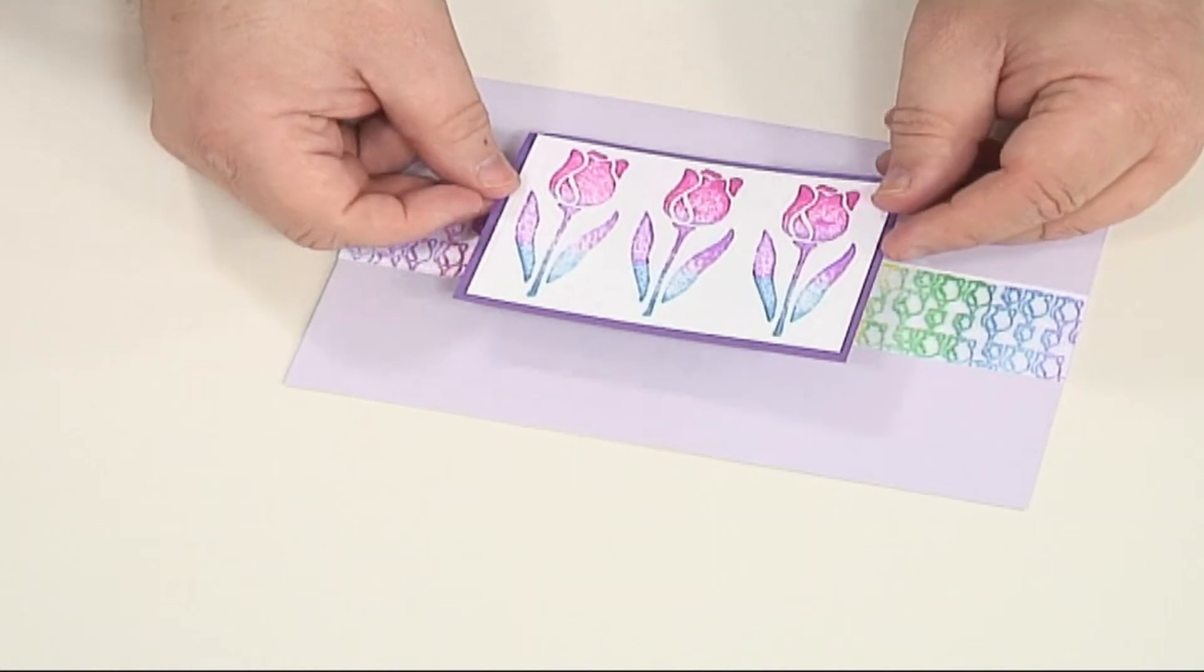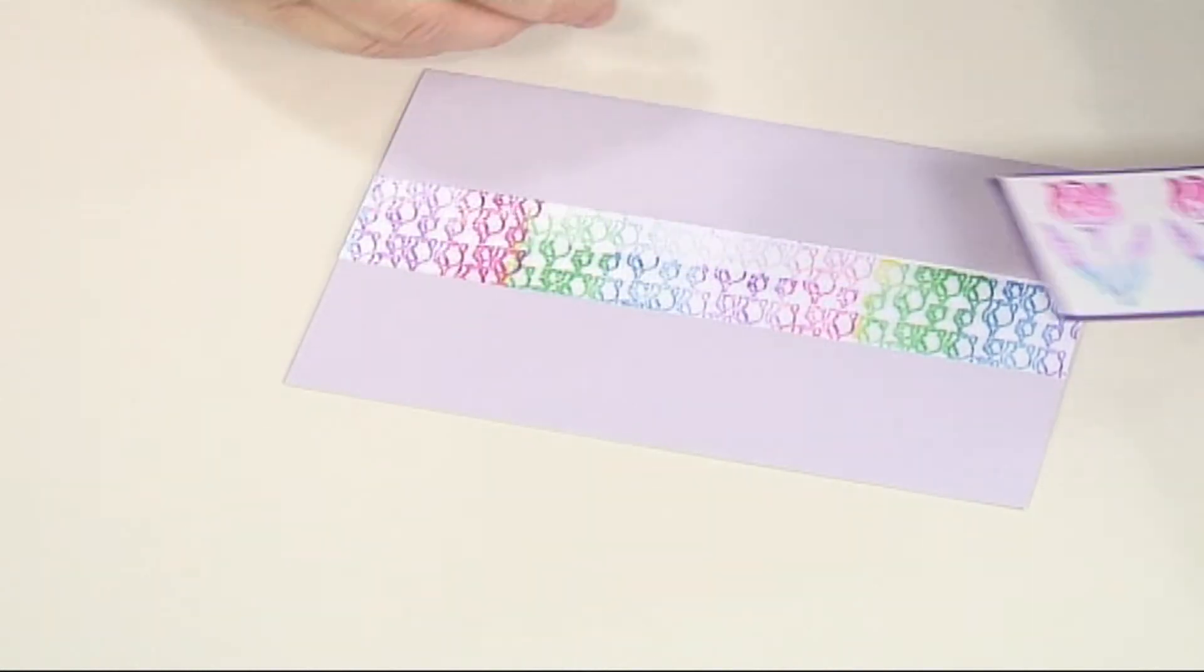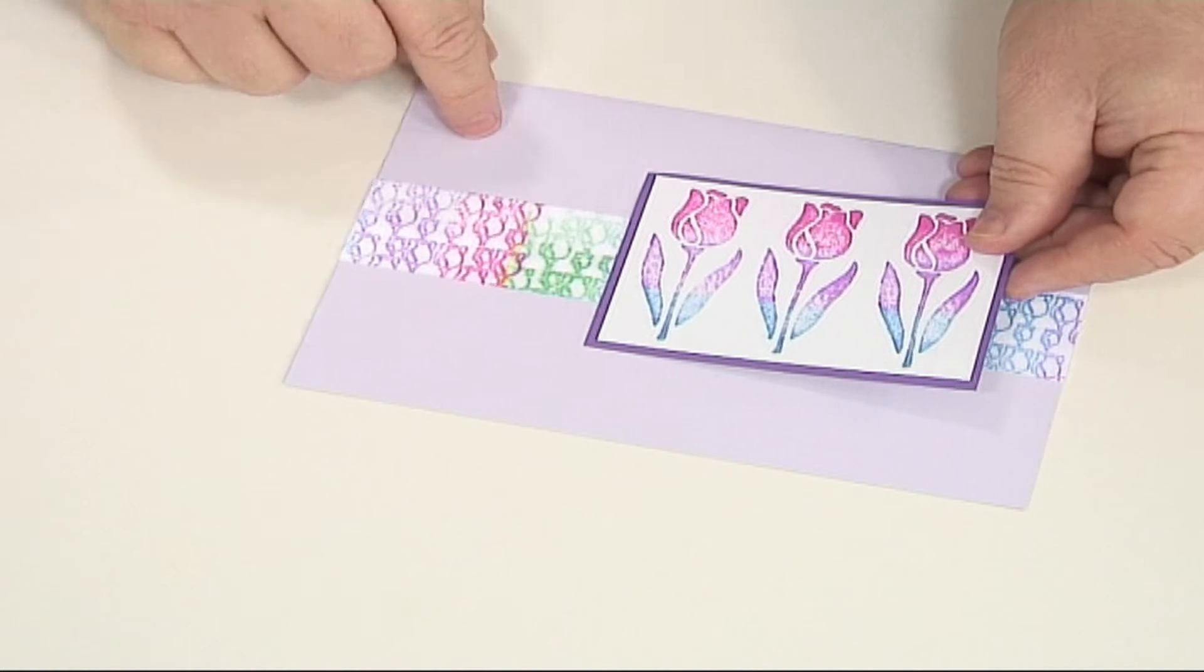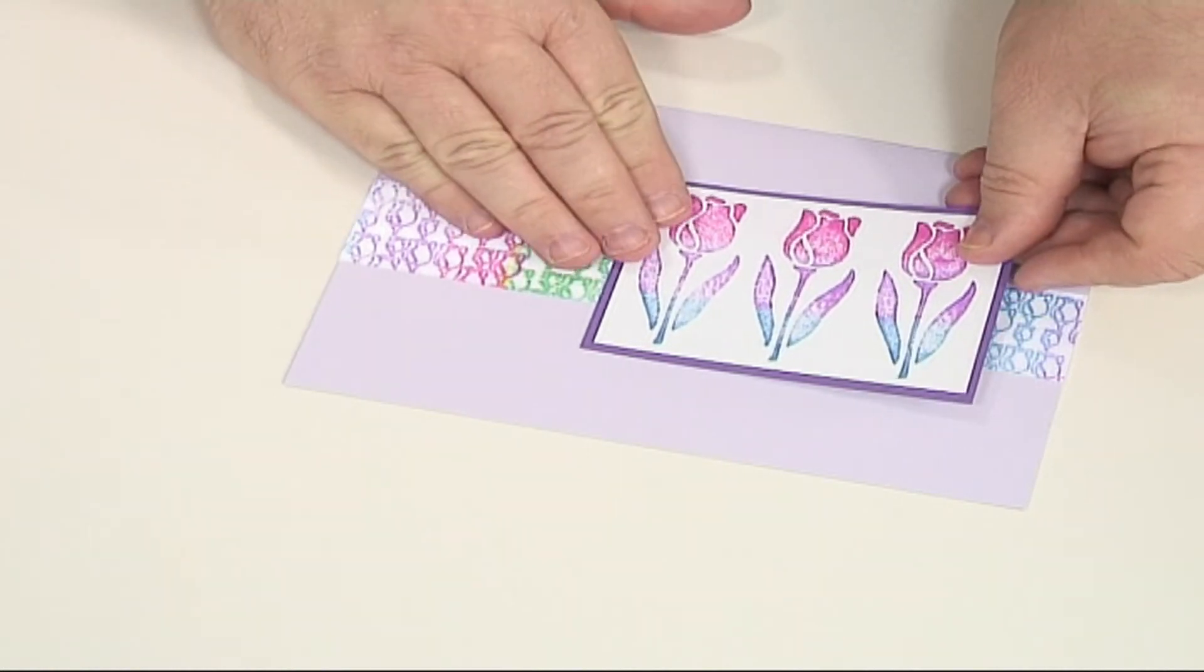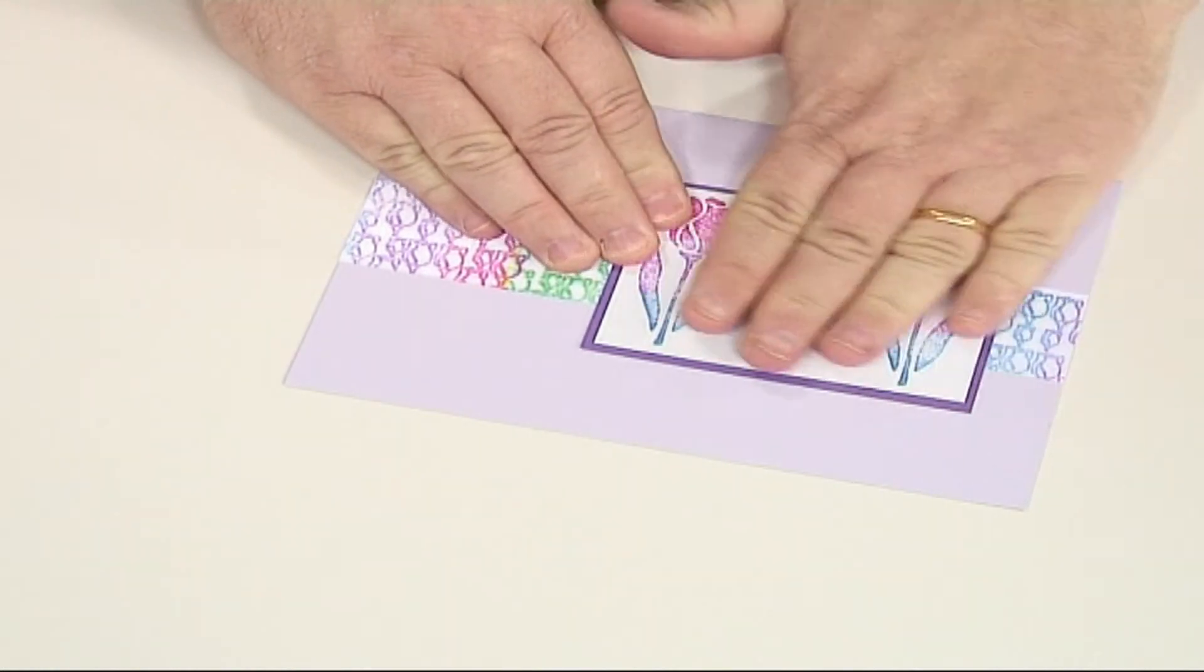I'm taking my rectangle here, and I'm just going to position it just off center because I've got another ribbon which I'm going to stick here. Double-sided tape on the back, and just press that down.